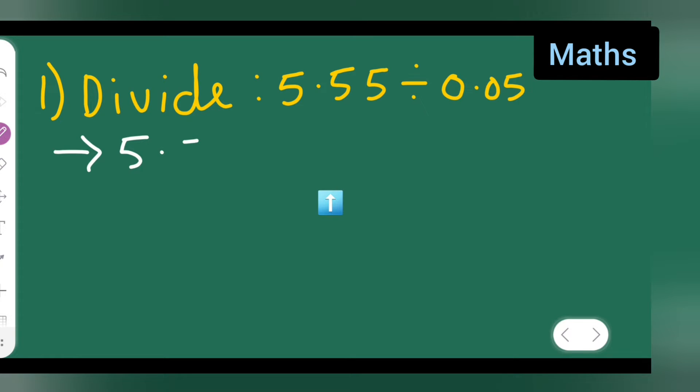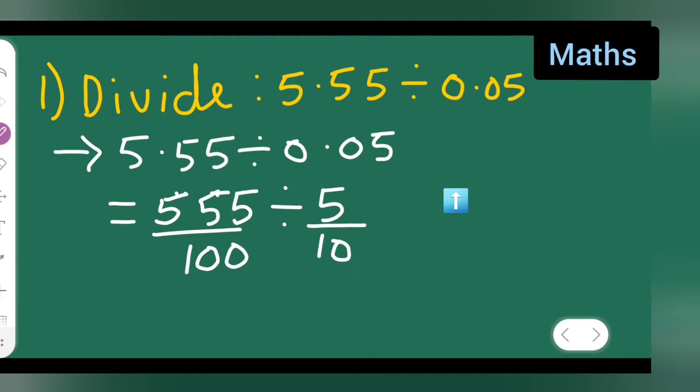Now this is equal to, remove the decimal point. So for that, write down 5.55 without a decimal point upon 100, because this is a place of 100, right? 10, 100. Here also 10, 100. So now divide it by 5 upon 100. I have removed the decimal point.